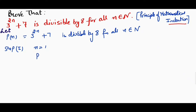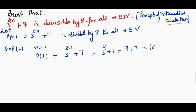So P(1) is equal to 3 raised to the power 2 into 1 plus 7, which is equal to 3 raised to the power 2 plus 7, which is equal to 9 plus 7, and this becomes equal to 16. We know that 16 is divisible by 8, so P(1) is divisible by 8.